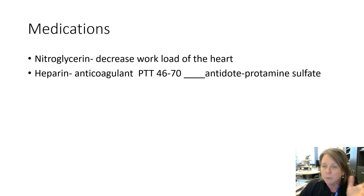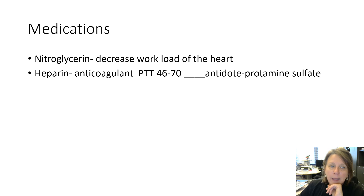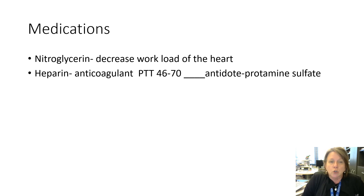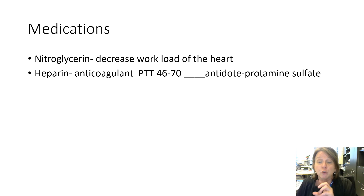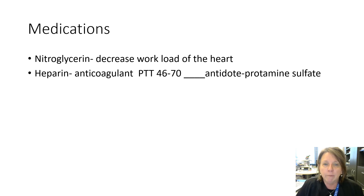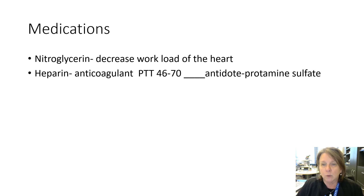Other key medications include heparin — an anticoagulant, not a 'blood thinner,' because it prevents clotting rather than thinning anything. It prevents further clot formation. Monitor PTT, which should be 46 to 70. The antidote for heparin overdose is protamine sulfate. Any time anticoagulants are given, watch for bleeding.